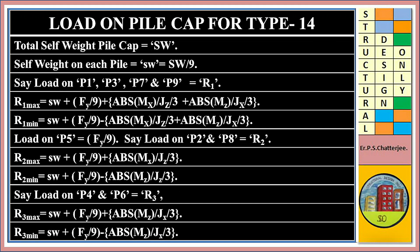Load on central pile P5 equals Fy/9. Load on piles P2 and P8 equals R2: R2 max equals sw plus Fy/9 plus |Mx|/Jz divided by 3; R2 min equals sw plus Fy/9 minus |Mz|/Jz divided by 3. Load on piles P4 and P6 equals R3: R3 max equals sw plus Fy/9 plus |Mz|/Jx divided by 3; R3 min equals sw plus Fy/9 minus |Mz|/Jx divided by 3.